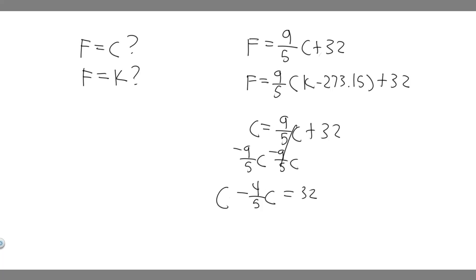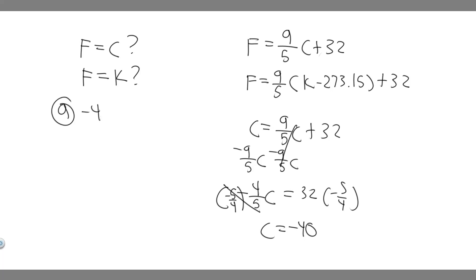To solve for C, we multiply both sides by minus 5/4. So C is equal to 32 multiplied by minus 5/4, which gives minus 40. So basically, they're the same when Celsius is equal to minus 40. The answer to part A is minus 40.